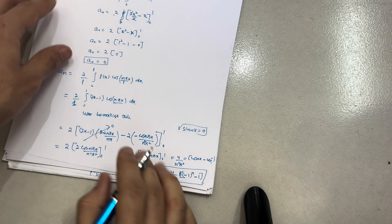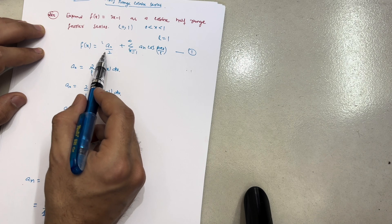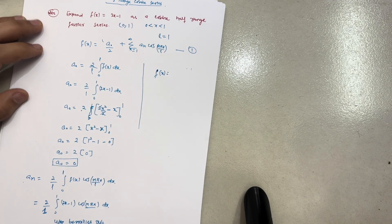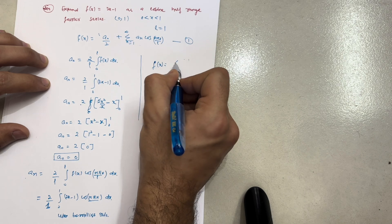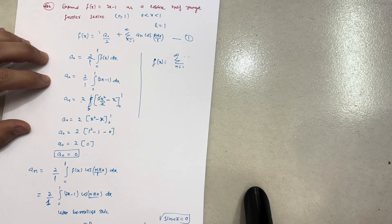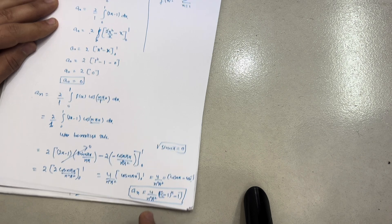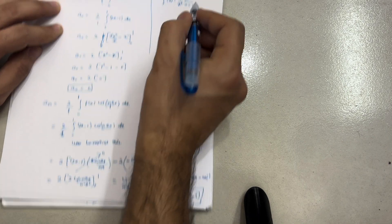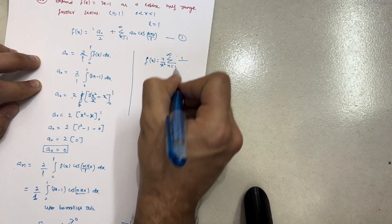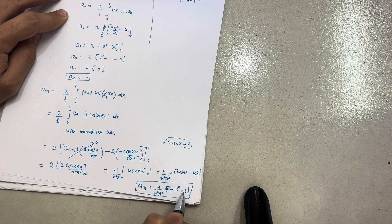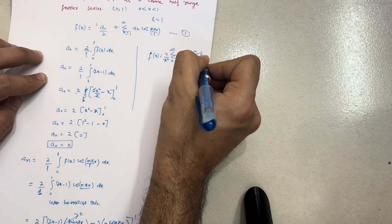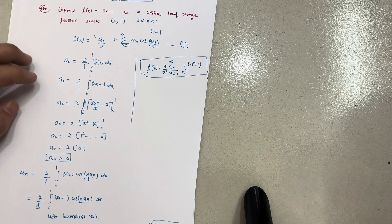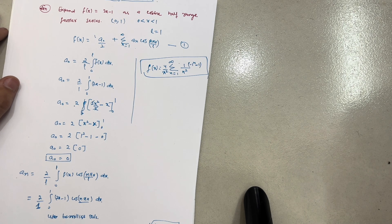Now substituting into the required series: f(x) = a₀/2 + summation of n from 1 to infinity of aₙ cos(nπx/L). Since a₀ = 0, we write: f(x) = summation of n from 1 to infinity of (4/n²π²)[(−1)ⁿ − 1] cos(nπx). Taking 4/π² out: f(x) = (4/π²) × summation of (1/n²)[(−1)ⁿ − 1] cos(nπx). This is the required half range cosine series. Hope you have understood — please share this video with friends who have backlogs in 18 MAT 31. Thank you.